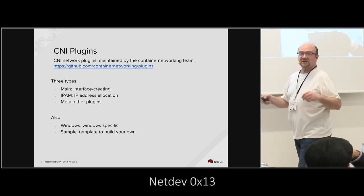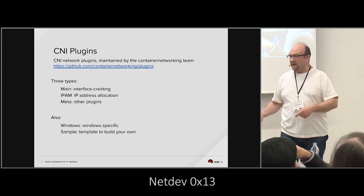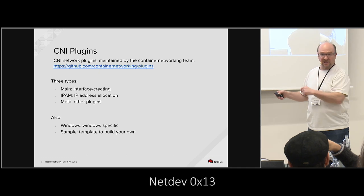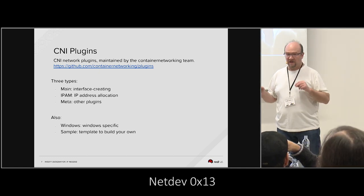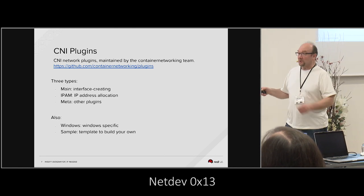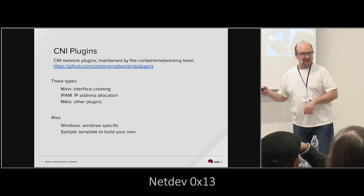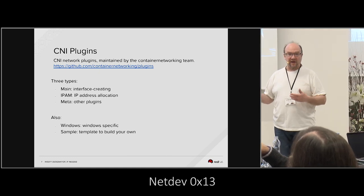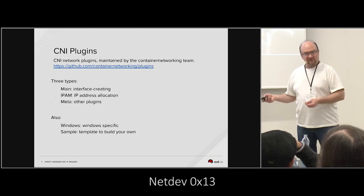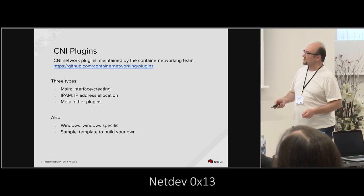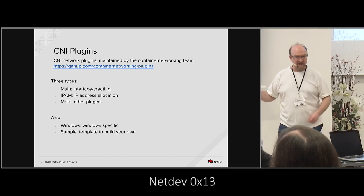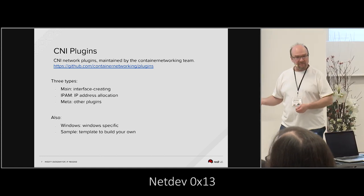In the container model you're supposed to have one process, ideally just the executable you're actually running. If you were to bundle an ISC DHCP client into your container, you're already starting to break that model. But if you did that, you wouldn't need an IPAM at all. Otherwise the CNI needs to bring IPAM to you. And then there's another type of plugin called Meta — it lets you do various things like tune parameters, IP tables rules, etc.